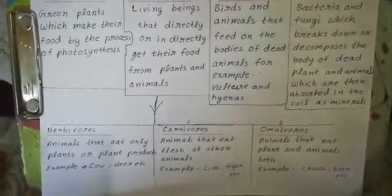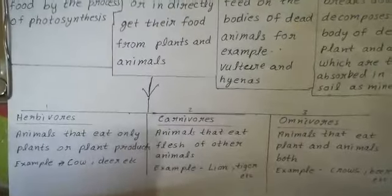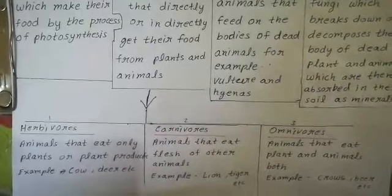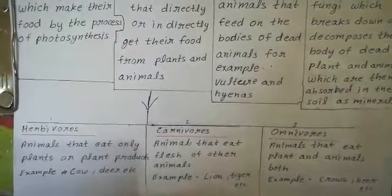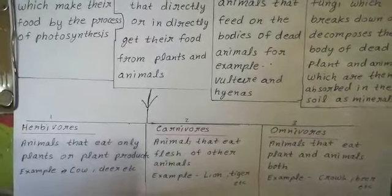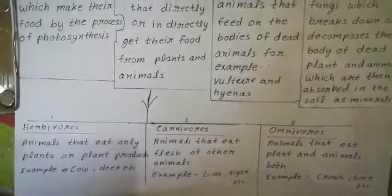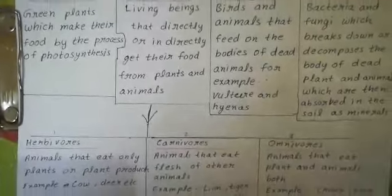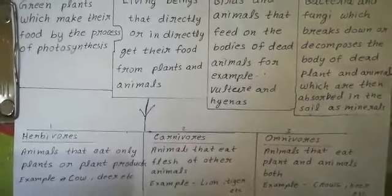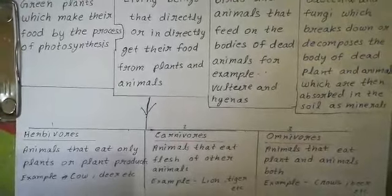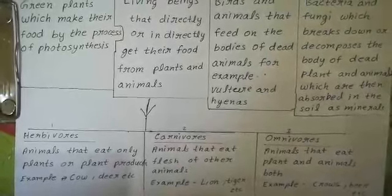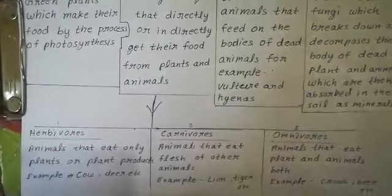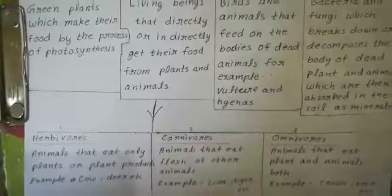Consumers are again divided into three categories: Herbivores, Carnivores, and Omnivores. Herbivores are animals that eat only plants or plant products — for example, cow, deer, etc. Carnivores are animals that eat the flesh of other animals — for example, lion, tiger, etc. Omnivores are animals that eat both plants and animals — for example, crows, bear, etc.